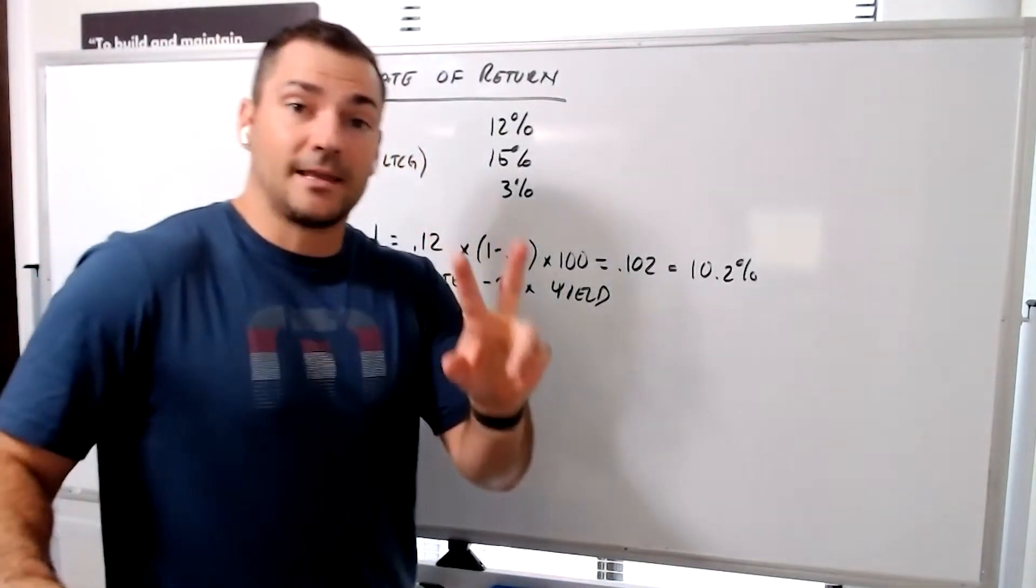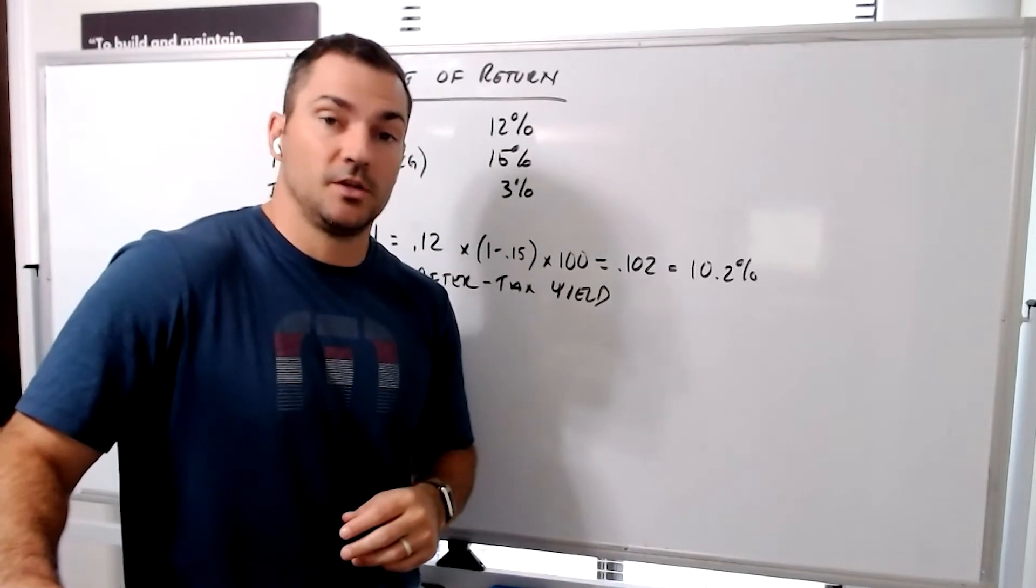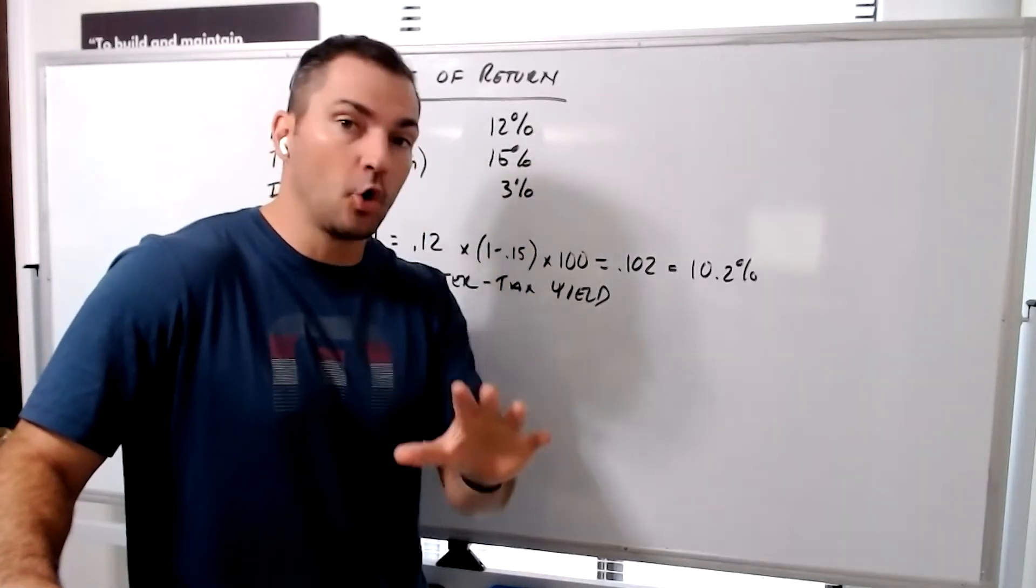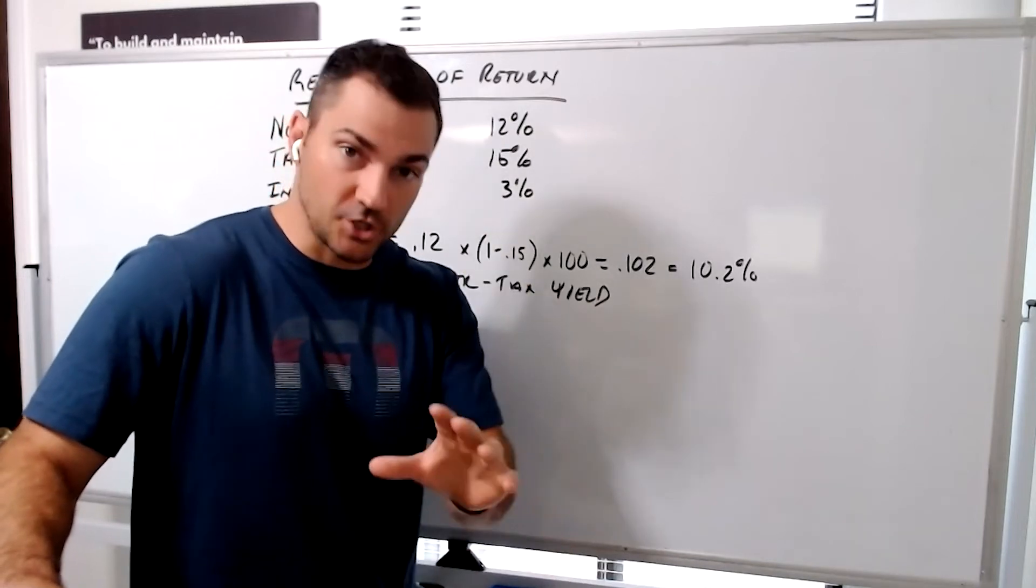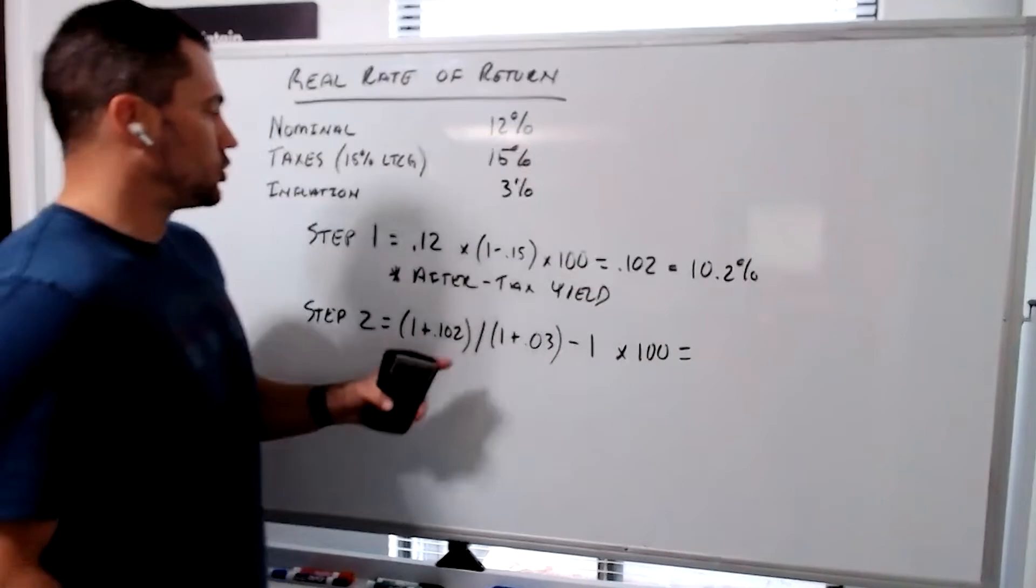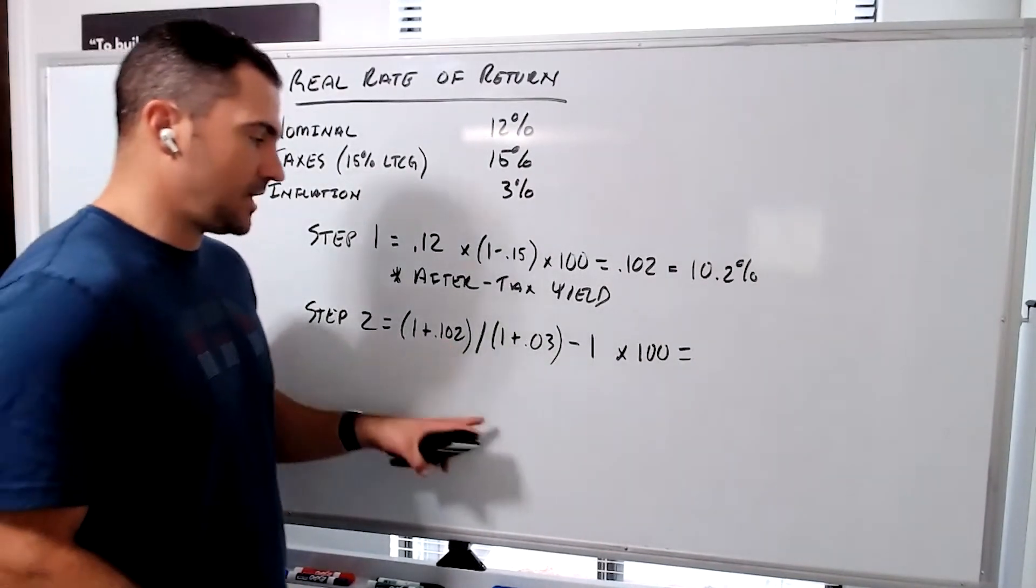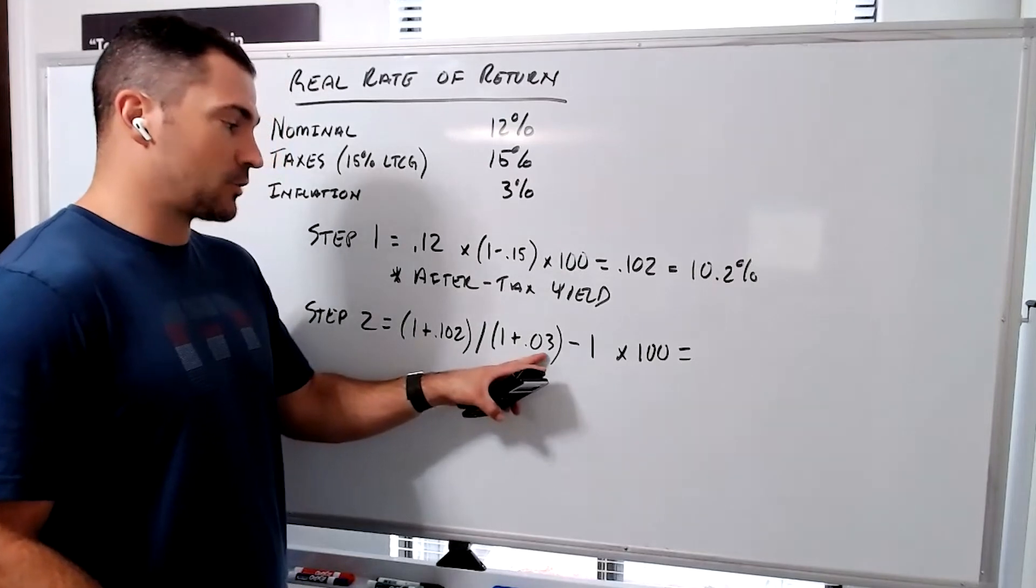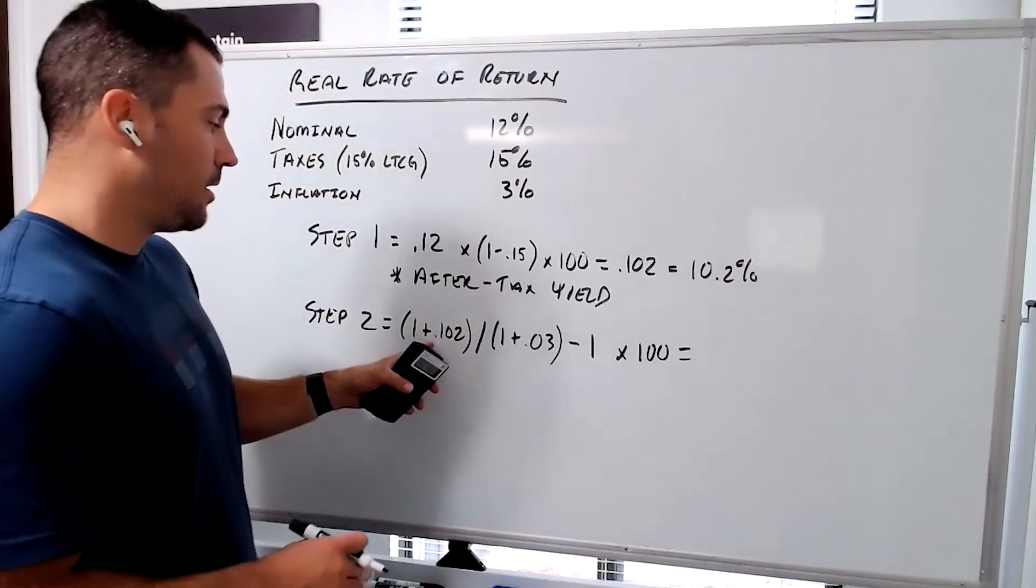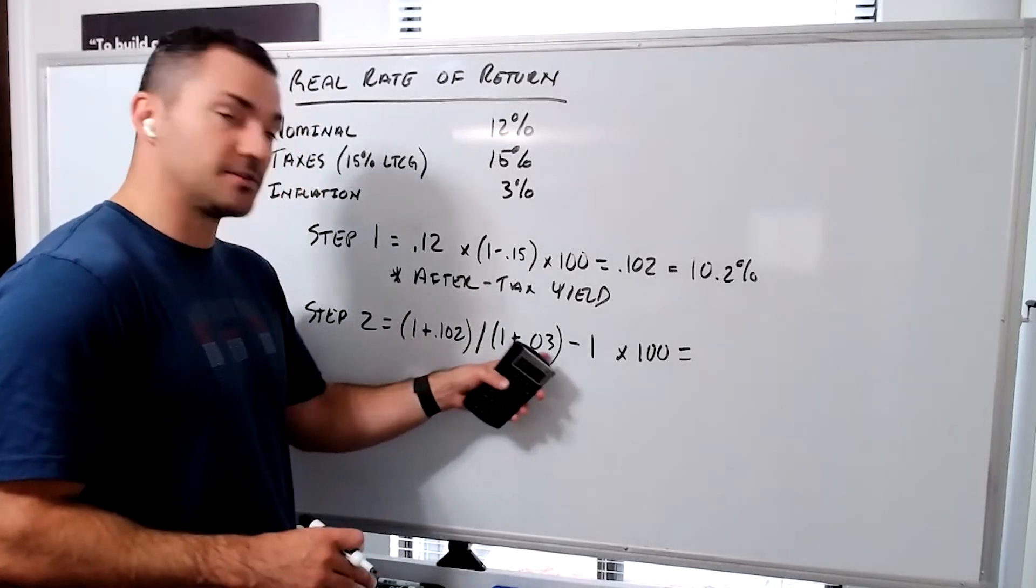Step two is now calculating inflation, because over the course of that year, the cost of goods increased. So now we need to deduct a little bit of inflation, because we're finding our total real rate of return after taxes and inflation. We're going to take our after-tax rate of return, which is 10.2%, and then we're going to take our inflation, which is 3%. We're going to turn those into decimals. So 1 plus 0.102 divided by 1 plus 0.03.